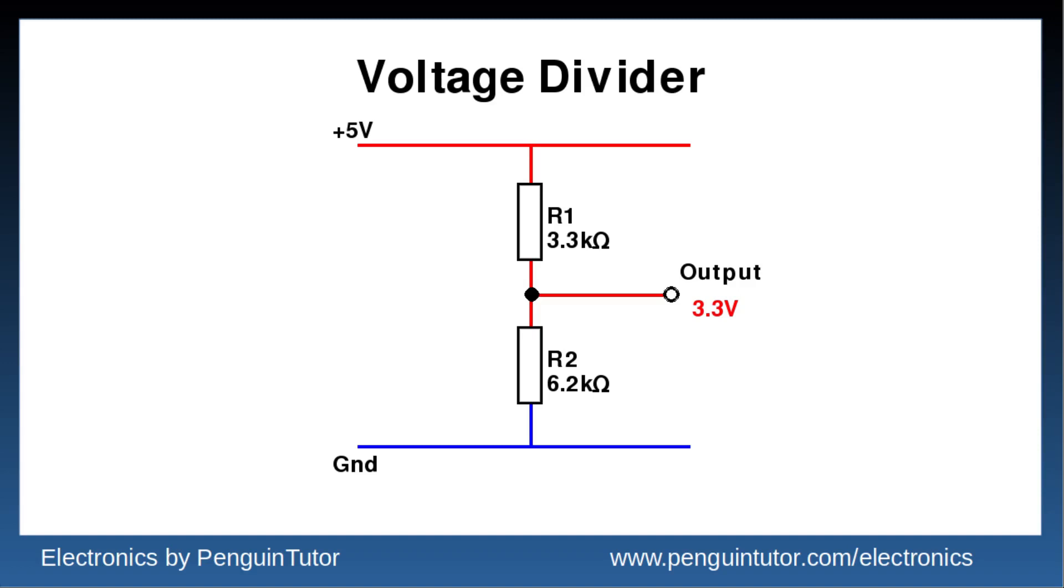This will only work if the input to the next stage has high resistance, so that doesn't affect the current through R1.